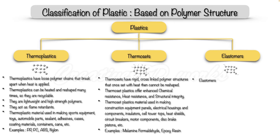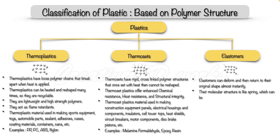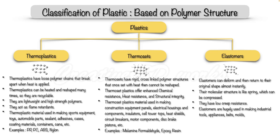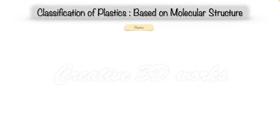Now let's see the elastomers. Elastomers can deform and return to their original shape almost instantly. Their molecular structure is like a spring which can be compressed. They have low creep resistance. Elastomers are usually used in making industrial tools, appliances, belts, molds, lubricants, shoe soles, baby pacifiers, seals, tires, wire or cable insulation, etc. For example: TPU, TPE.